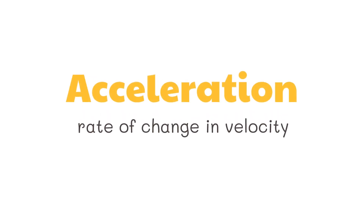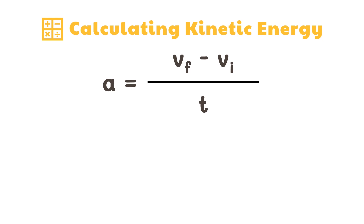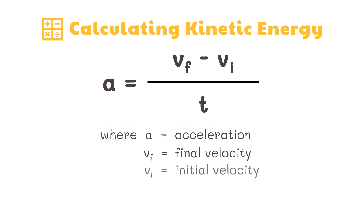In lesson 1, we learned that acceleration is the rate of change in velocity. The equation to compute for acceleration is: acceleration equals final velocity minus initial velocity divided by time, where a is acceleration, vf is final velocity, vi is initial velocity, and t is time.